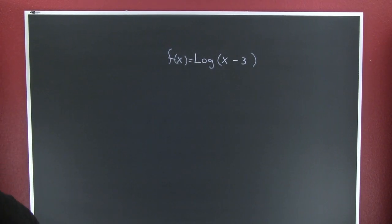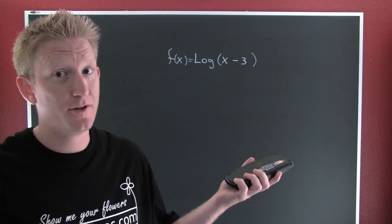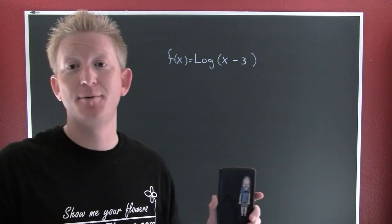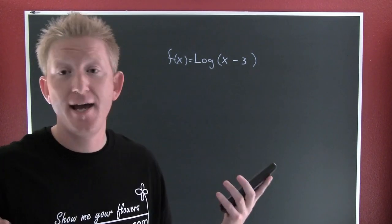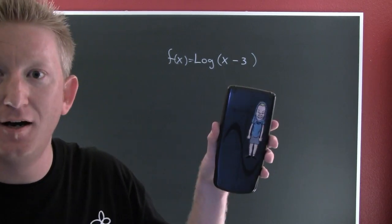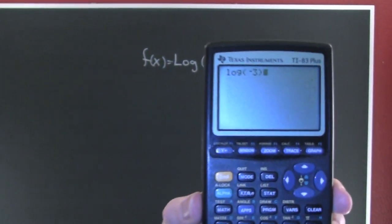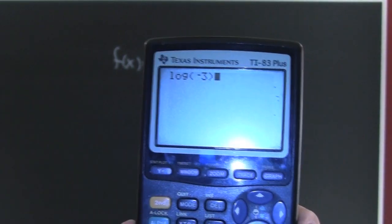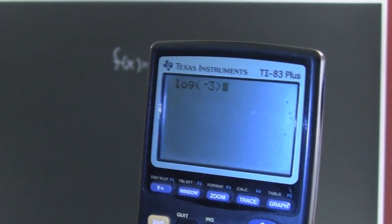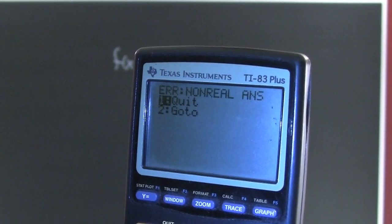Got my trusty TI calculator here. So I'm taking a look at this — what happens if we take the log of negative three? It angers my calculator.